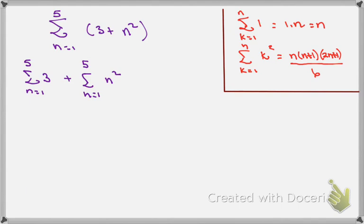Remember that for sums, just like any other things we've been using with our limits, derivatives, and integrals, you can factor out constants. So that becomes 3 times the summation n equals 1 to 5 of 1 plus summation n equals 1 to 5 of n squared.